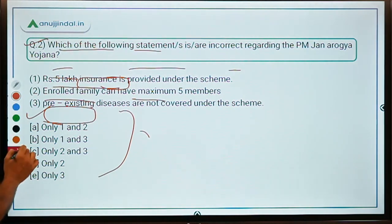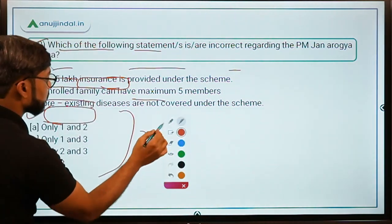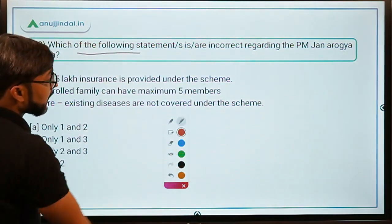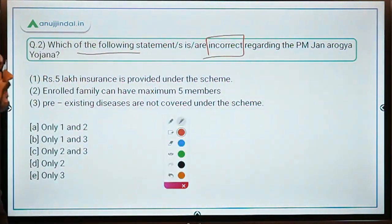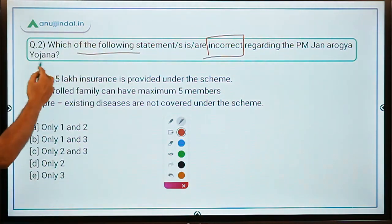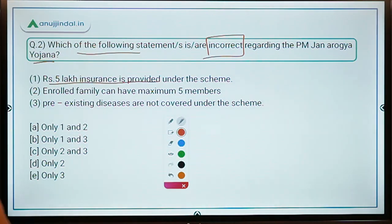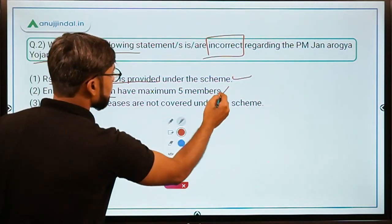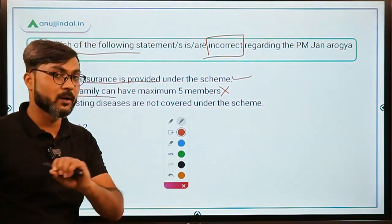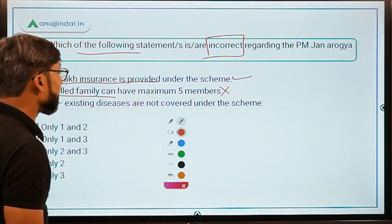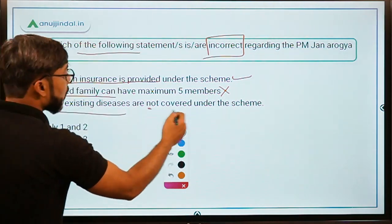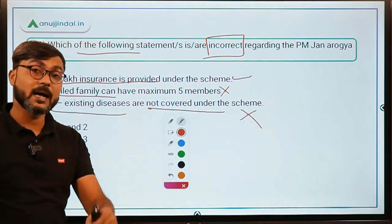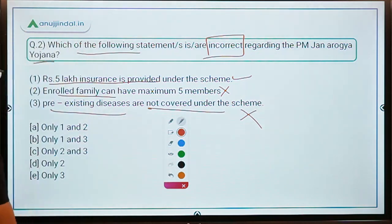Question two: Which statement is incorrect regarding PMJAY? Statement one — five lakh insurance is provided — is correct. Statement two — enrolled family can have maximum five members — is incorrect; there is no cap on family size. Statement three — pre-existing diseases are not covered — is also incorrect; pre-existing diseases are covered under Ayushman Bharat. So the correct answer is option C: only two and three.